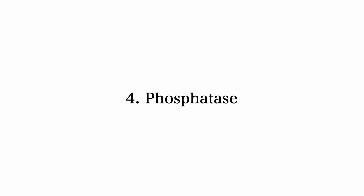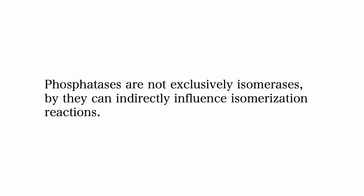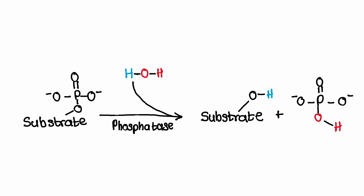And finally, we have phosphatases. Phosphatases are not exclusively isomerases, but they can indirectly influence isomerization reactions. Phosphatases are enzymes that catalyze the removal of a phosphate group from a molecule through hydrolysis. However, their activity can indirectly influence isomerization reactions in certain biochemical contexts, as this alters the molecule's activity, stability, or interaction with other molecules.